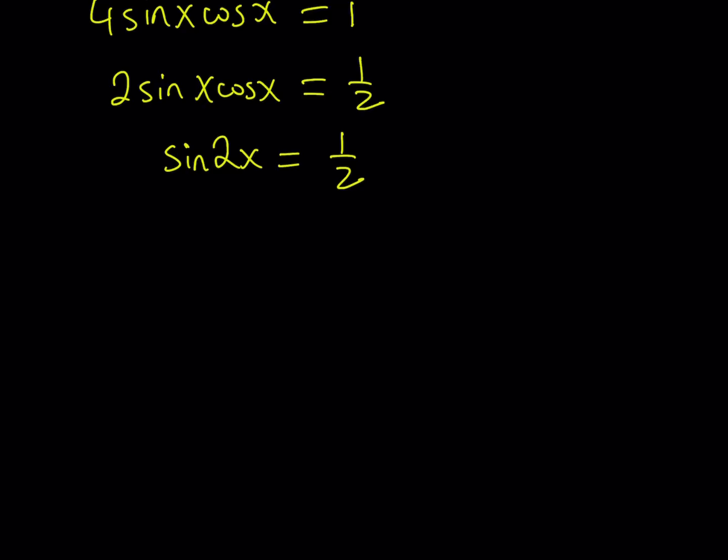From here, since we know that there are two angles whose sine is 1 half, they are pi over 6 and 5 pi over 6, we can safely say that 2x is either pi over 6, and of course we have to add even multiples of pi. And you can divide both sides by 2, and you get x equals pi over 12 plus n pi. Here, n is an integer.